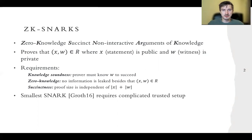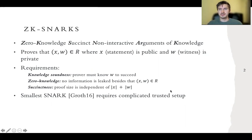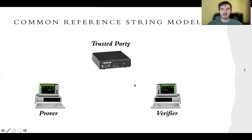The smallest SNARK so far, or at least one of the smallest, was proposed by Groth in 2016, and it requires a complicated trusted setup, unfortunately, which has made it very difficult to use in practice. So what do I mean by this trusted setup? Essentially, we have a prover, a verifier, and some trusted central party.